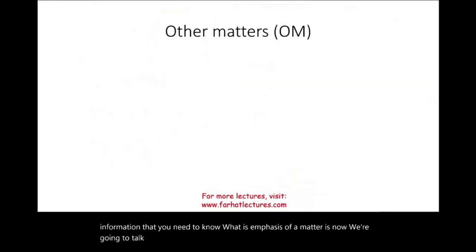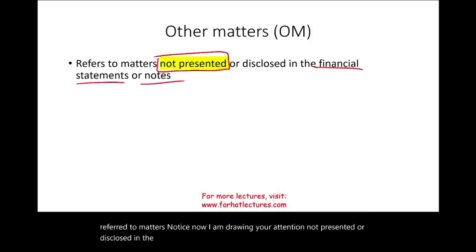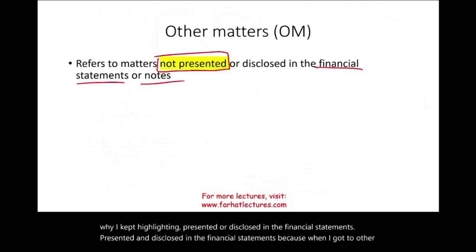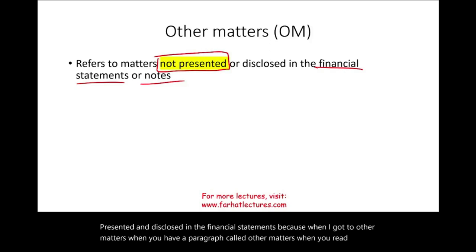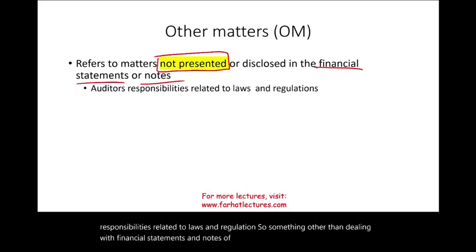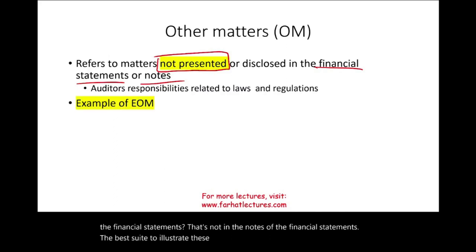Now let's talk about other matters. Other matters is pretty straightforward — it refers to matters not presented or disclosed in the financial statements and the notes. Now you understand why I kept highlighting 'presented or disclosed in the financial statements.' When you have a paragraph called other matters, that paragraph does not deal with anything on the notes or the financial statements. It deals with the auditor's responsibilities related to laws and regulations — for example, describing the auditor's responsibilities, which are not in the financial statements or notes.